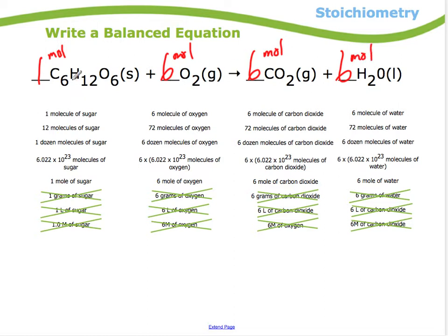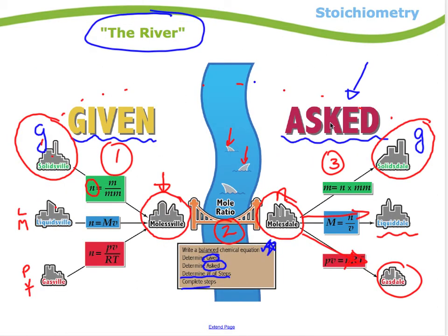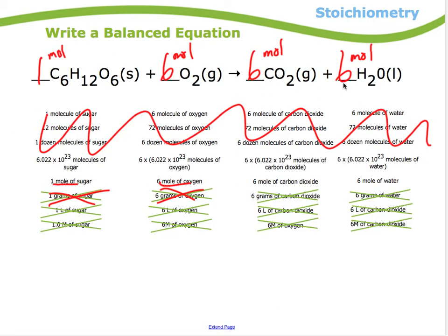This is step one — just the chemical reaction, nothing else yet. Notice that you cannot say one gram of sugar reacts with six grams of oxygen. You cannot compare grams of one substance to grams of another. You have to compare moles of one to moles of another. Just like in the river, you can't jump from grams on one side to grams on the other — you have to go through moles.